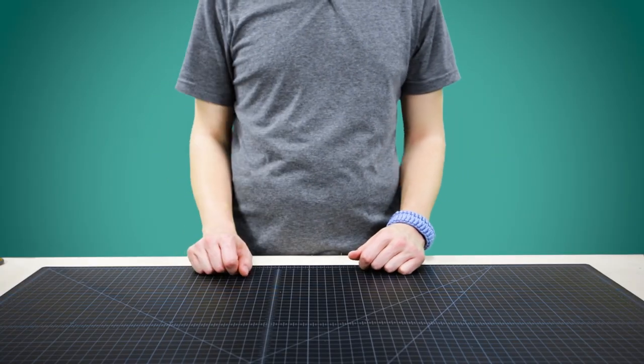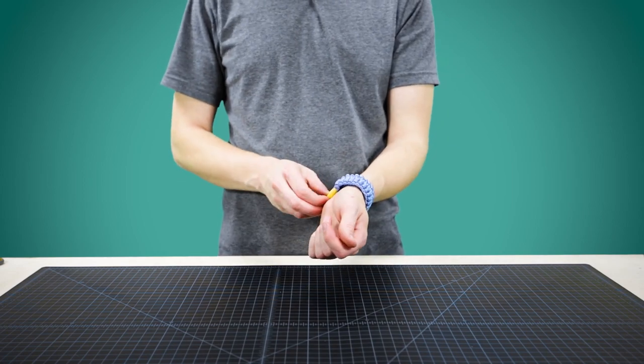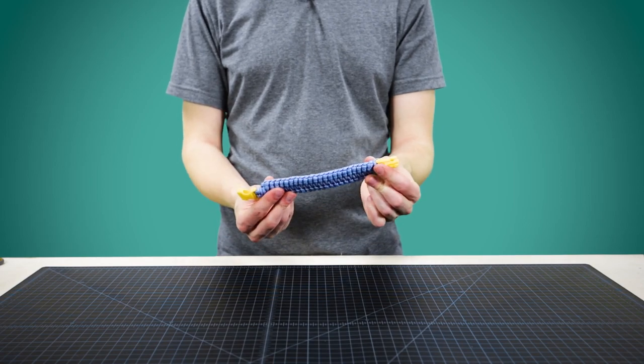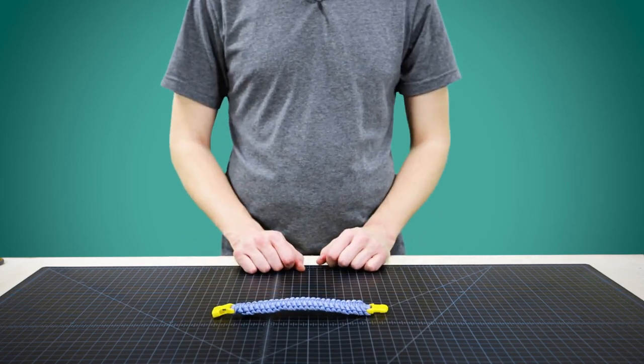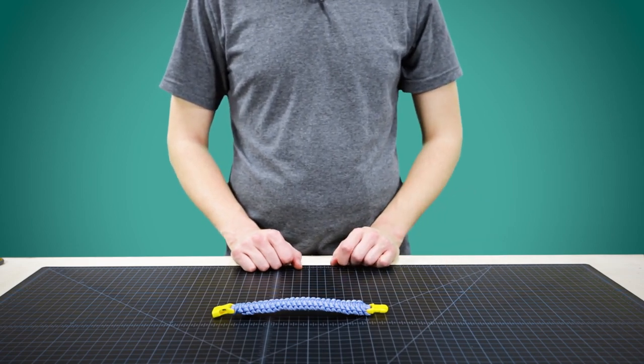We'll put links in the description to where you can find the Instagrammers who came up with this idea, how we set up this four strand core, and also where you can buy paracord and buckles. We hope you guys enjoyed this one. If you did, leave us a like and subscribe if you want to be updated whenever we post a new video. Otherwise, thanks for watching. We'll catch you next time.